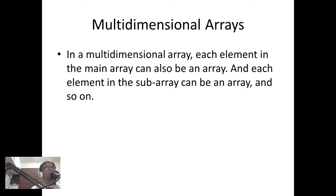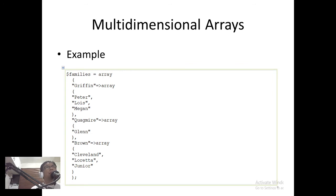We also have what we call multi-dimensional arrays. In a multi-dimensional array, each element in the main array can itself be an array, and each element in the subarray can also be an array, and so on — we can have several dimensions. Multi-dimensional arrays are essentially nested arrays, or arrays inside another array. In the example, we have an array named 'families' where the index 'Griffin' is associated with an array of three values, 'Quagmire' with one value, and 'Brown' with three values — making it a multi-dimensional array.